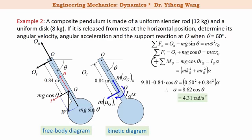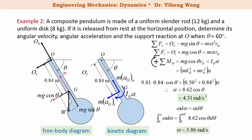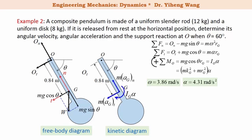To find the angular velocity, since this is rotation about a fixed axis, we use the kinematic relation omega * d(omega) equals alpha * d(theta) and integrate. At theta equals 60 degrees, omega equals 3.86 rad/s. Now that we know both the angular velocity and acceleration at theta equals 60 degrees, we can substitute them into the first and second equations to calculate O_N, the normal reaction force, and O_T, the tangential reaction force. This completes the problem.